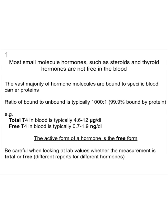The key thing about small molecule hormones, such as steroids or thyroid hormone, is that they're not free to circulate within the blood. Instead, the vast majority of these molecules are bound to specific carrier proteins. The ratio of bound to free is typically about a thousand to one, meaning about 99.9% of this kind of hormone is bound within the blood.